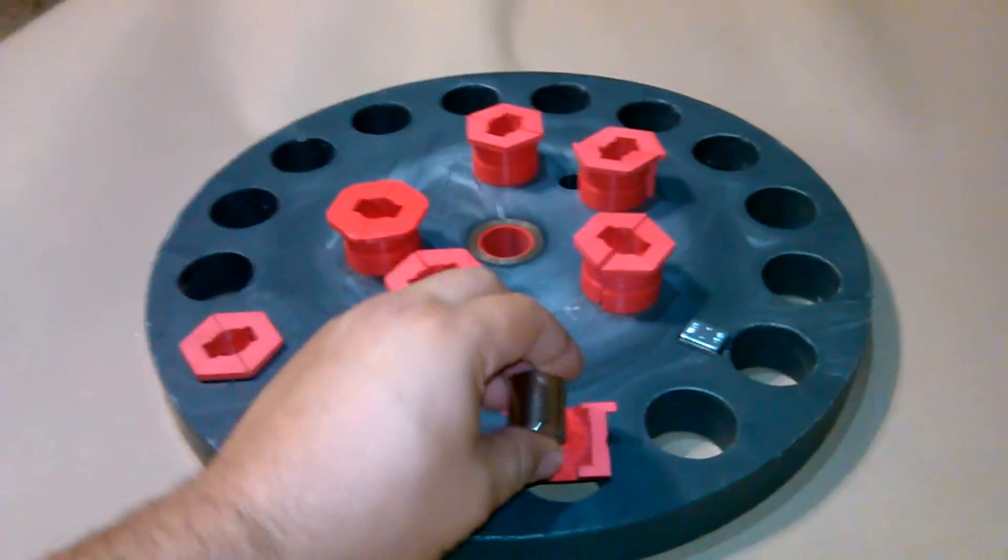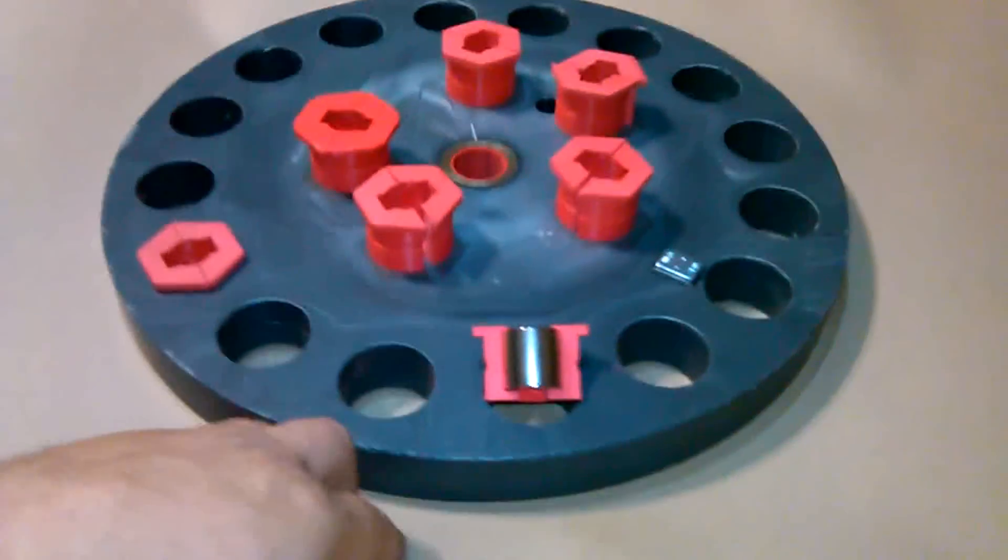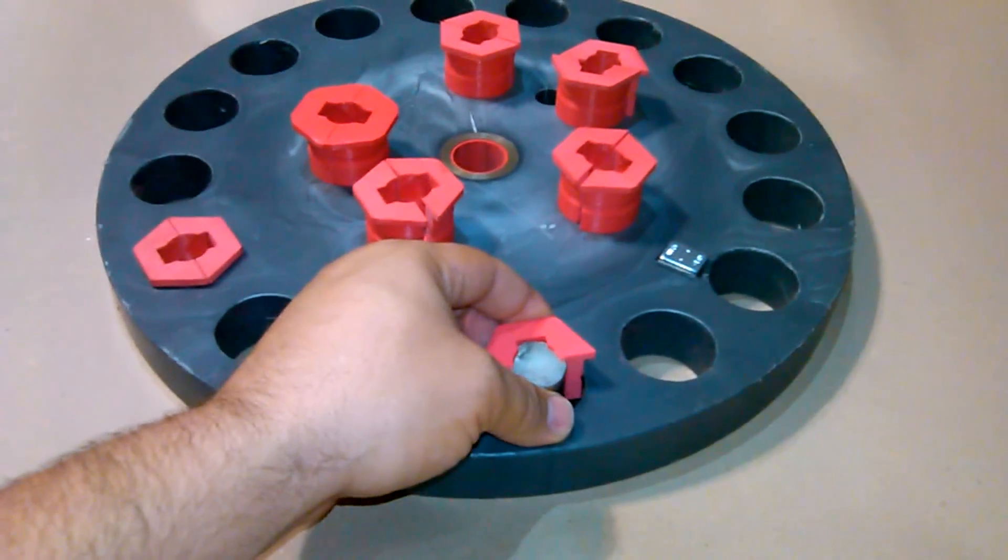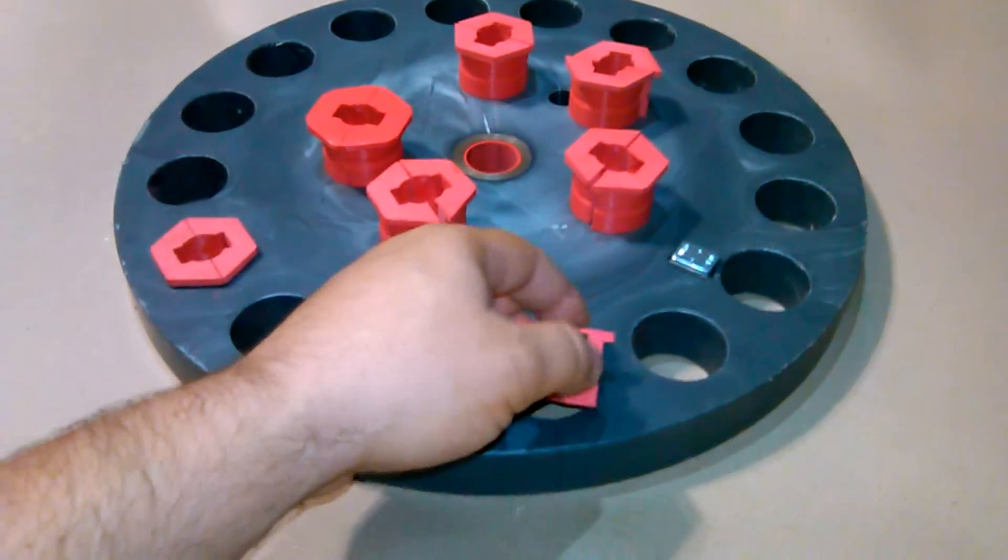But here's how the magnet fits in. As you can see, this is the top profile, and how it fits inside the rotor is just like this, so that you can have your north and south on the rotor configuration.